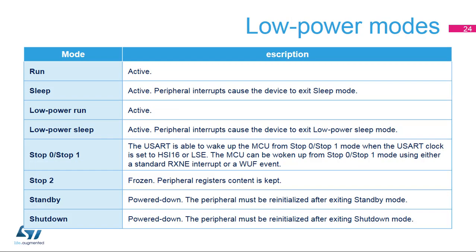The USART peripheral is active in run and low-power run, sleep, and low-power sleep modes. USART interrupts cause the device to exit sleep or low-power sleep modes. The USART is able to wake up the MCU from stop 0 or stop 1 mode when the USART clock is set to HSI-16 or LSE. The MCU can be awakened using either a standard RXNE interrupt or a WUF event. In stop 2, the device is not able to perform any communication. In standby and shutdown modes, the peripheral is in power-down and must be re-initialized after exiting those modes.